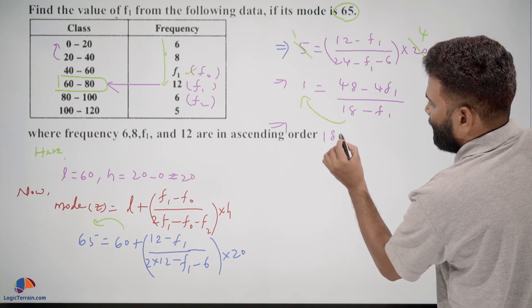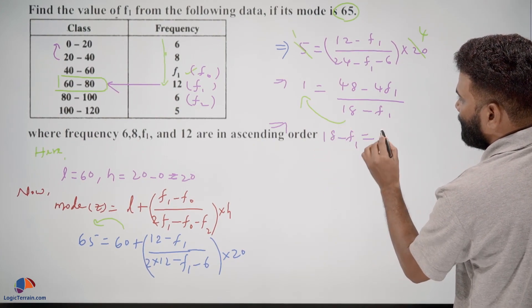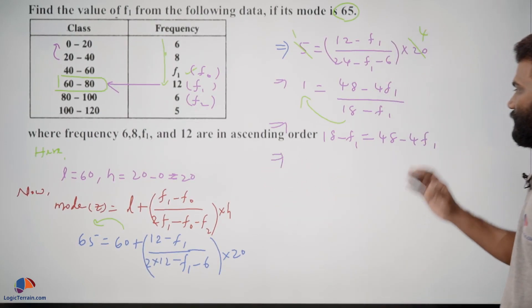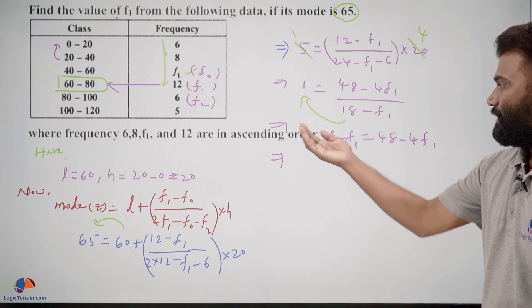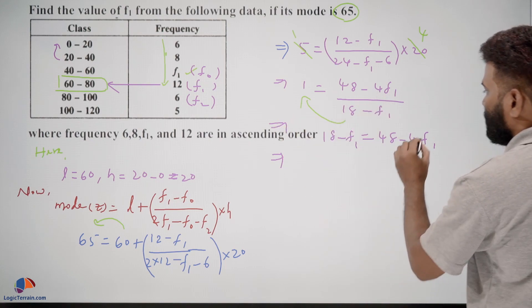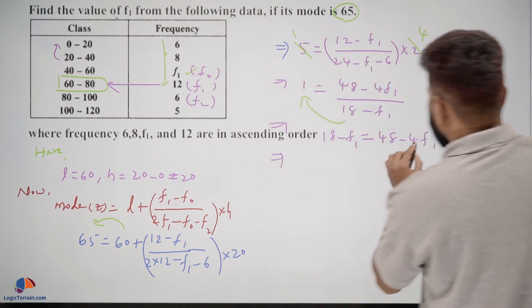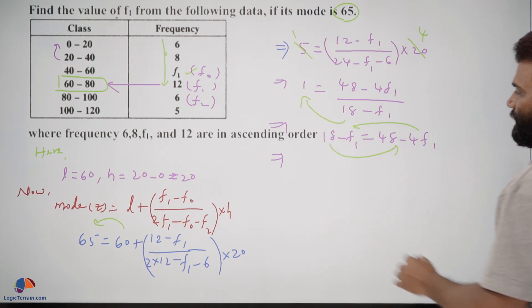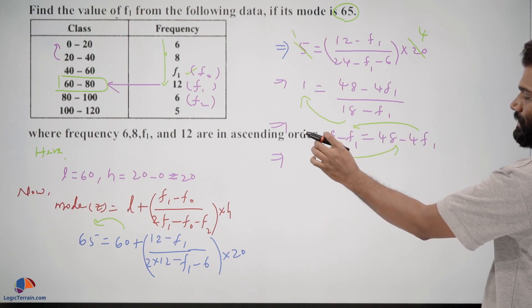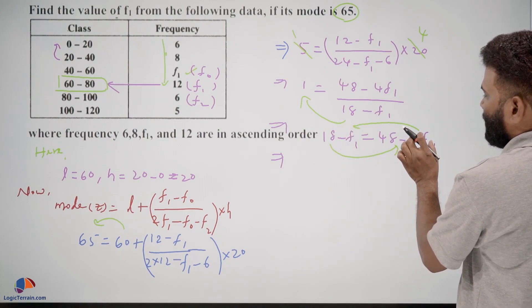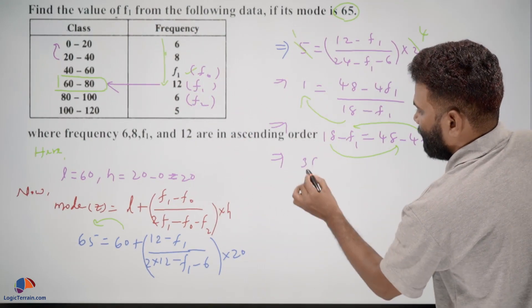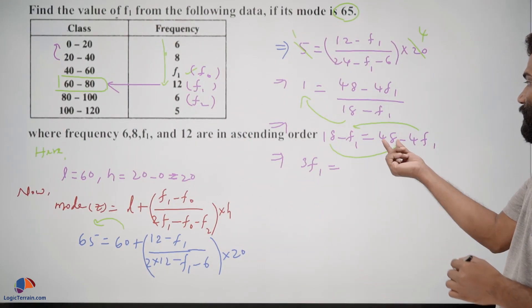So if you take this f1 to the other side and bring 18 to this side, 4f1 goes to the other side positive, so plus 4f1 minus f1, here you're left with 3f1 equals 48. If it comes here negative 18, 48 minus 18, here you will be left with 30.